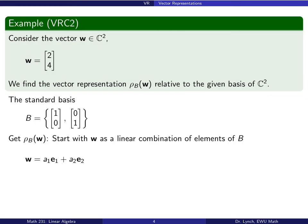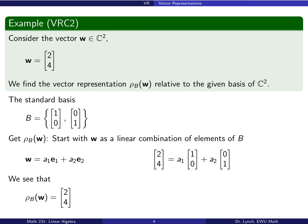Let's look at a couple of examples. Take the vector w = (2, 4) in C² and find ρ_b(w) relative to the standard basis b. To get ρ_b(w), we write w as a linear combination of the standard basis elements. With the standard basis, it's quick: a₁ must be 2 and a₂ must be 4. So ρ_b(w) = (2, 4)ᵀ.